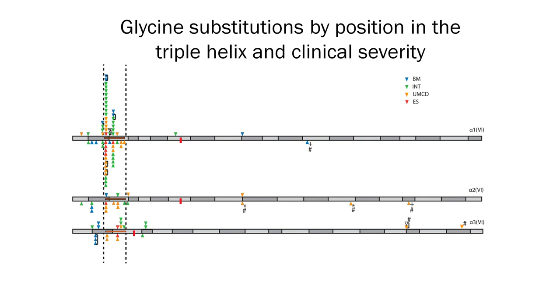To determine whether genotype could predict the severity of clinical symptoms, we grouped patients according to clinical severity and location of the glycine substitution within the triple helical domain. Early severe Ullrich congenital muscular dystrophy patients are the most severe group and these patients never walk. Typical Ullrich CMD patients achieve independent ambulation with significant impairment and lose ambulation by age 12. In the intermediate Ullrich CMD group, patients achieve independent ambulation and maintain it beyond age 12 but often lose it before adulthood. The mildest subgroup, Bethlem myopathy, are ambulatory into adulthood with only minor impairments in gait. Intermediate Ullrich CMD cases were the most common, accounting for 40% of patients, emphasizing their importance in the clinical spectrum beyond the classically defined syndromes Ullrich CMD and Bethlem myopathy.